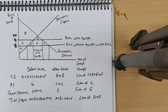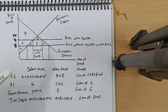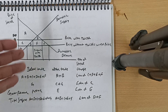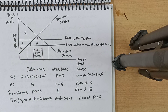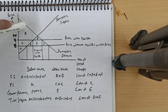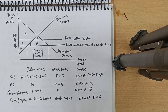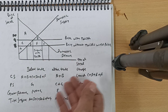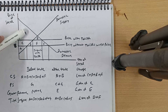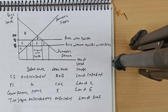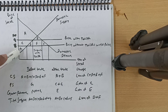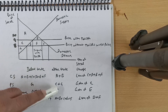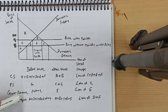Before tariff (free trade), consumer surplus was A plus B plus C plus D plus E plus F. After the tariff, with the price rising to 9, consumer surplus falls to A plus B — a loss of C plus D plus E plus F. Producer surplus before tariff was G; after tariff it becomes C plus G — a gain of C. Government collects revenue equal to area E, because imports equal the gap between domestic demand (4 units) and domestic supply (2 units after tariff), and tariff applies to those imports.